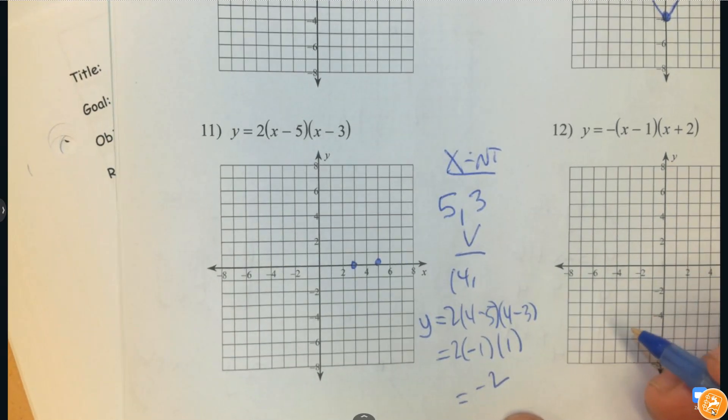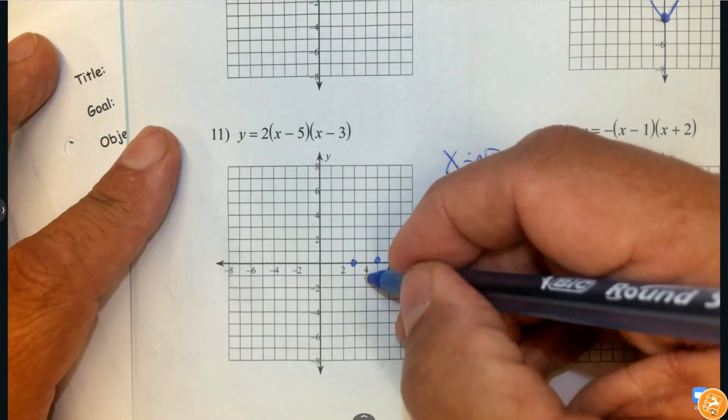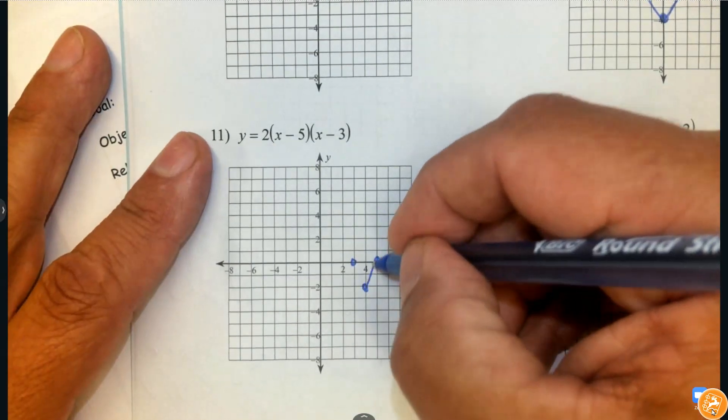So this is 2 times negative 1 times positive 1. So altogether the answer is negative 2. So 4 and negative 2, and then draw your parabola.